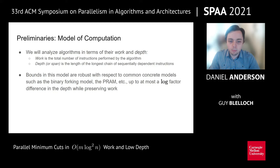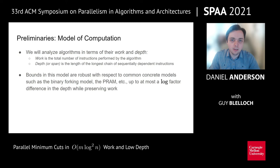A couple of quick preliminaries. We're going to talk about algorithms in terms of their work and depth. Work is the total number of instructions performed by the algorithm, and depth is the length of the longest chain of sequentially dependent instructions, also commonly called span or parallel time. Bounds in this model are robust with respect to common concrete models such as the PRAM or the binary forking model — they're all work equivalent and at most a log factor difference in the depth.